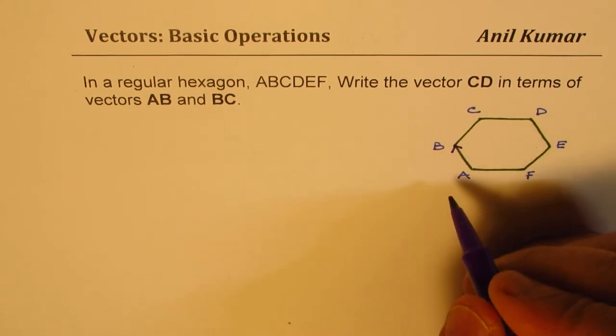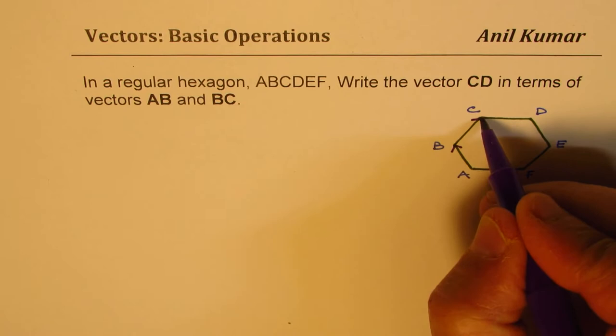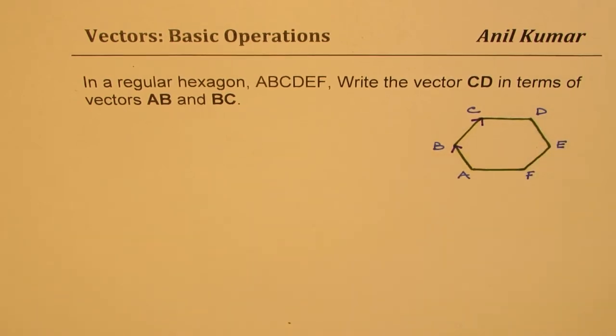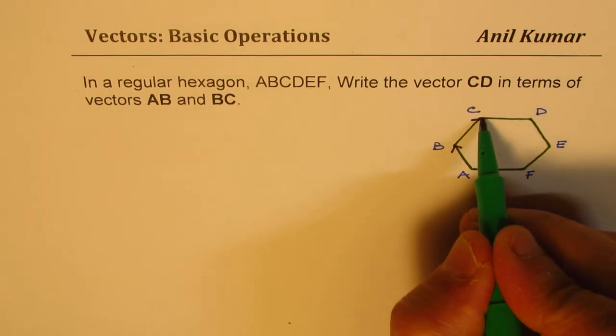Now the question here is that we are given the vectors AB, that is our vector AB, and then we have a vector BC. What we need to find is how can we write the vector CD, which is this vector.